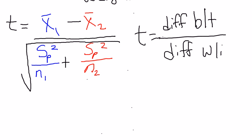So bt between, wi within. That's all that this formula, I'm just simplifying it down into conceptual understanding for you. T equals the difference between over the difference within.